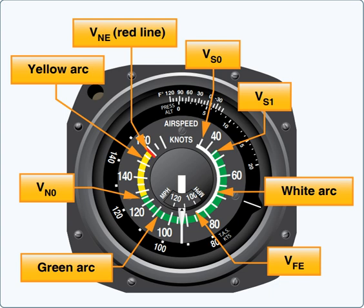Indicated airspeed is read directly off the ASI. It has no correction for air density variations, installation, or instrument errors. Calibrated airspeed is corrected for installation and instrument errors. An airspeed calibration chart is available for any remaining errors.